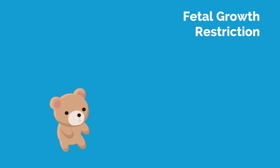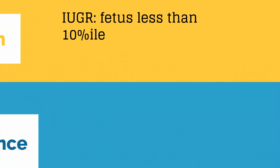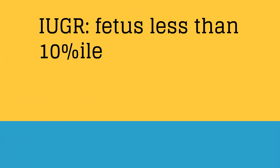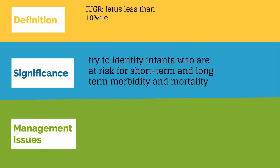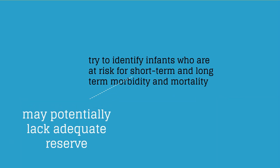Let's now move to fetal growth restriction, which describes infants whose weights are lower than expected. The definition of intrauterine growth restriction, or IUGR, is when the fetus is less than the 10th percentile. Remember that this means the prevalence of IUGR is approximately 9 percent, and therefore the change in percentile over time may be the more important measurement. The goal is to identify infants at risk of short-term and long-term morbidity or mortality. Small fetuses potentially lack adequate reserve to continue intrauterine existence or to undergo the stress of labor.